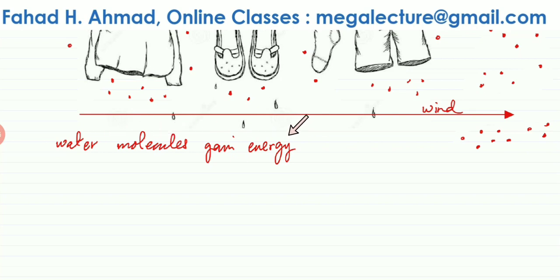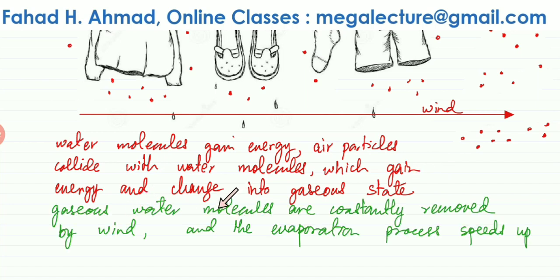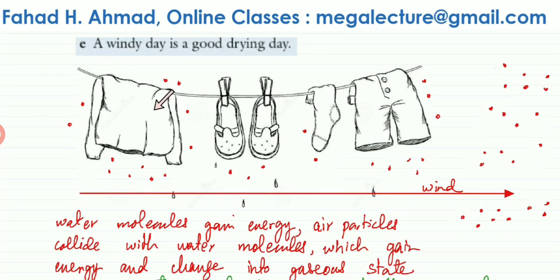The water molecules gain energy from the constant bombardment of air particles on a windy day. They overcome the intermolecular forces, change into gaseous state, and leave the clothes. The wind then carries these evaporated water molecules away so they don't return and re-stick to the clothes. This process continuously repeats, speeding up evaporation and explaining why a windy day is a good drying day.